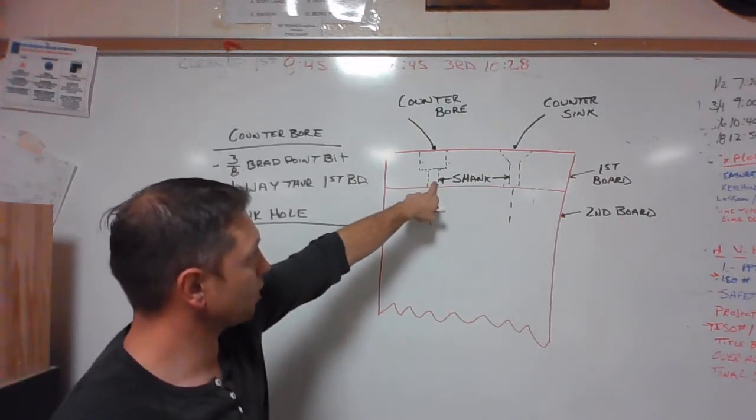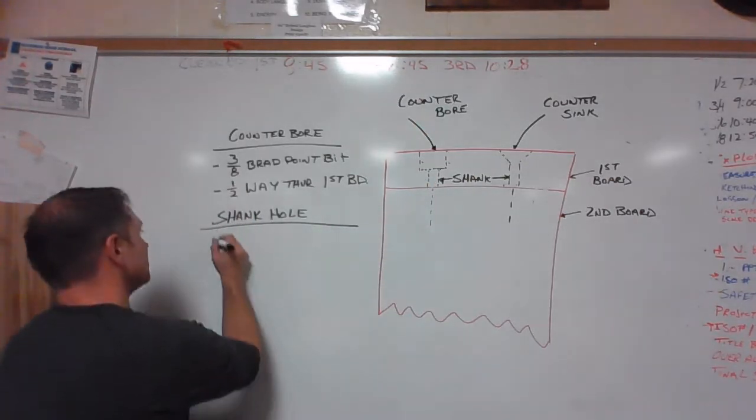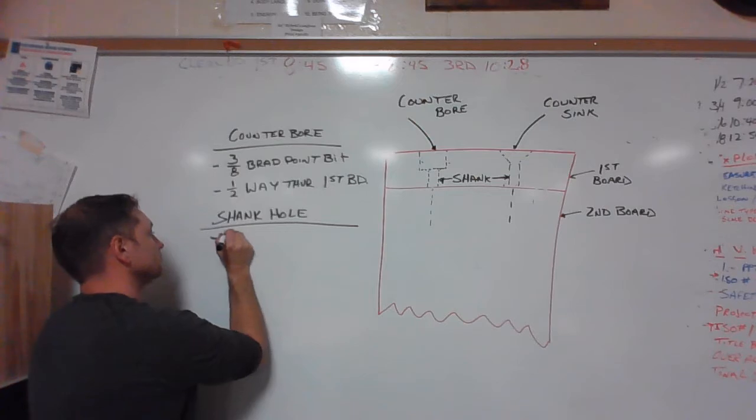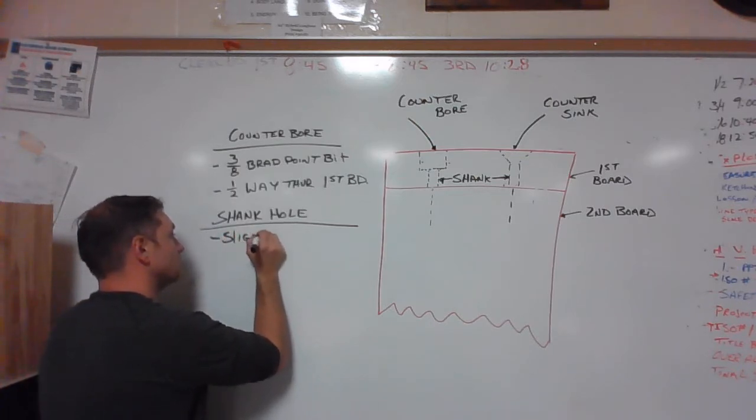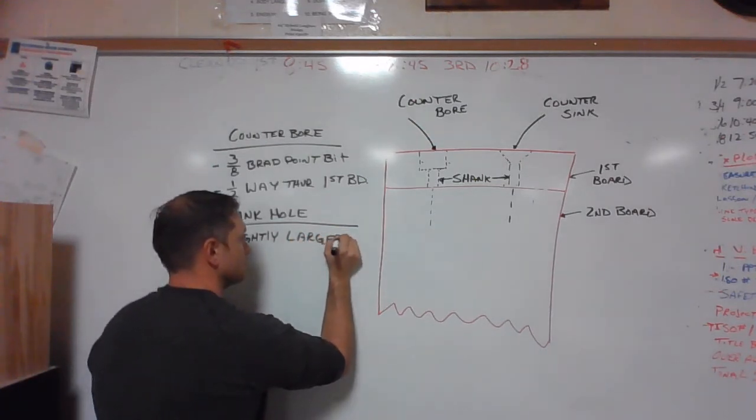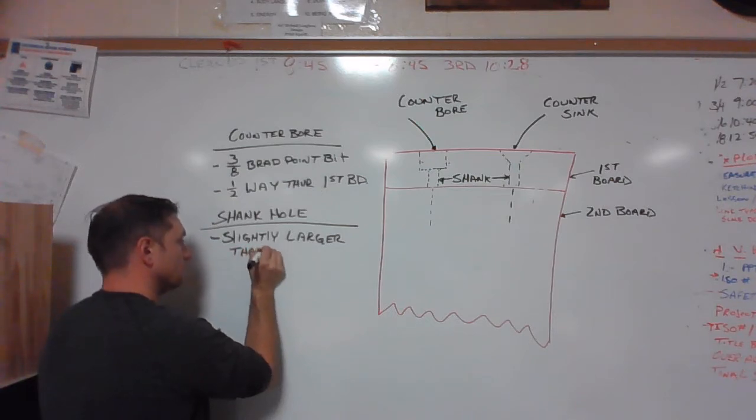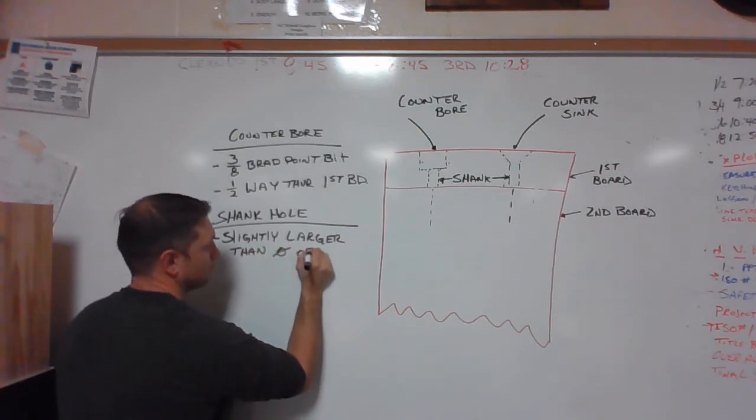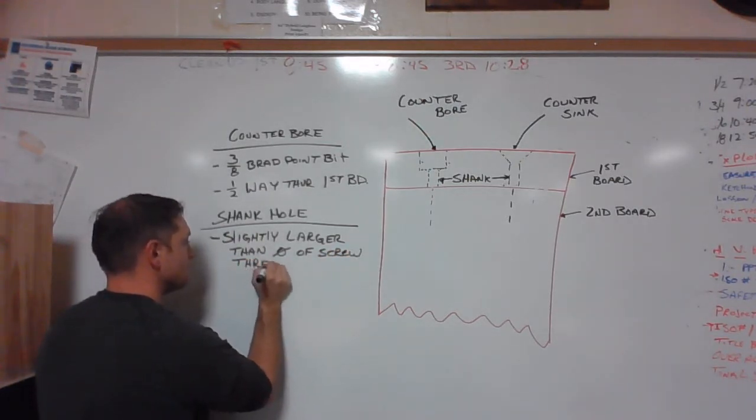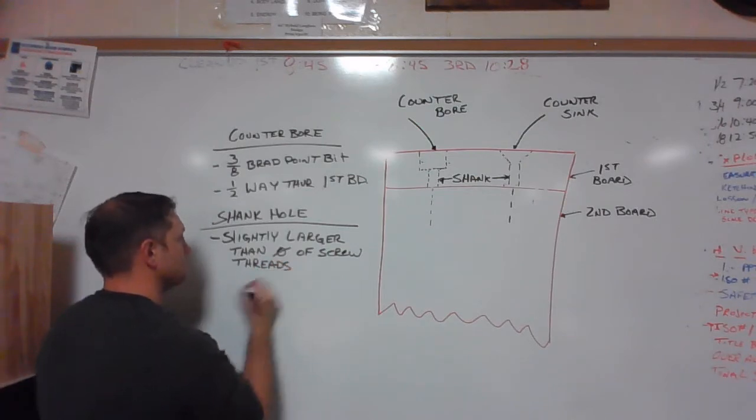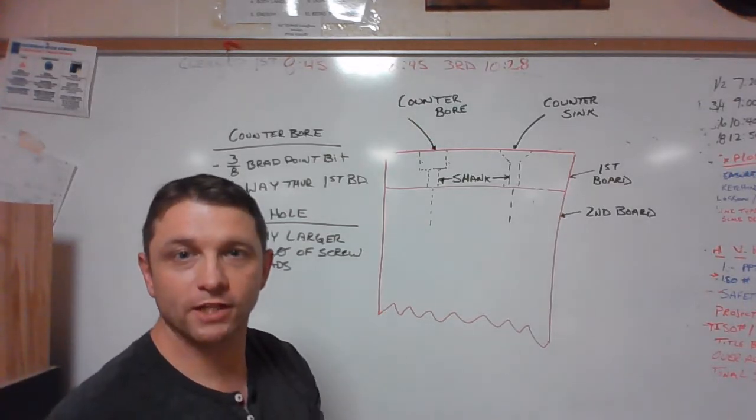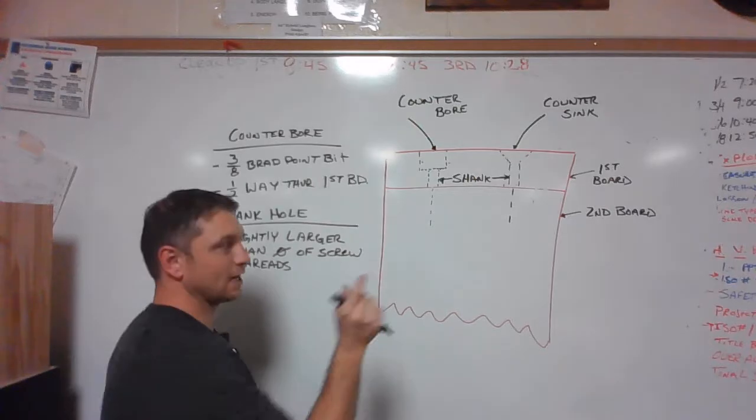So how we're going to determine what size to make this hole, the shank hole, is it's going to be slightly larger than the diameter of the screw threads. Once again we're going to determine what size the diameter of the screw is. Once we've determined what the diameter of the screw is, we're then going to drill that hole slightly larger than this.